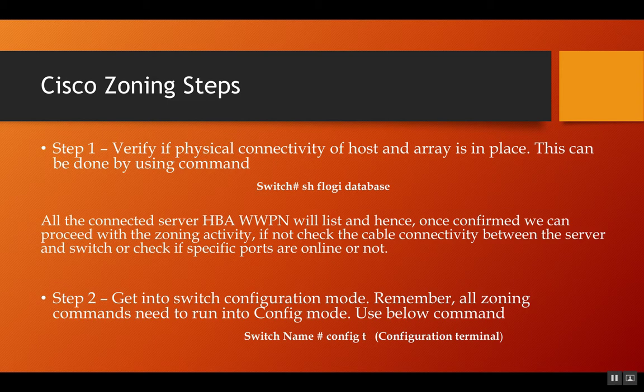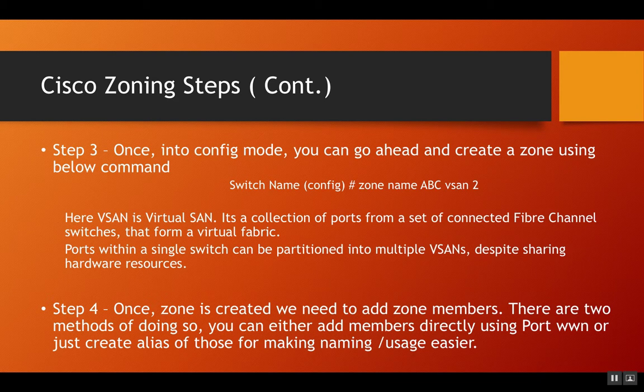Once you have your WWNs listed in your switch database, you can get into the switch configuration mode. Without going into the switch configuration mode, there is nothing about zoning that you can do. Use the command 'config t' — configuration terminal. You can use multiple such commands and it will lead you to the configuration terminal. Once you're in config t, your switch prompt will show the switch name followed by the config mode indicator.